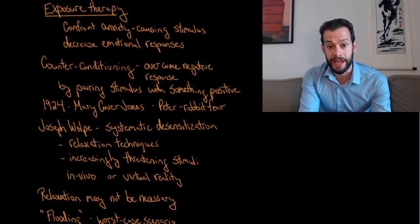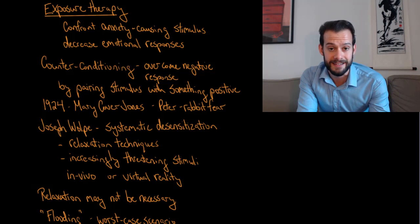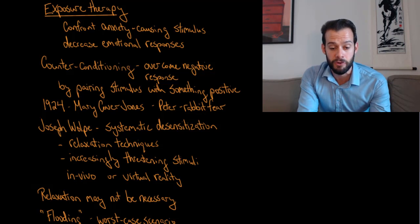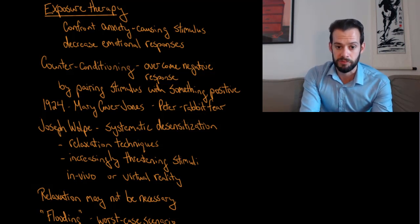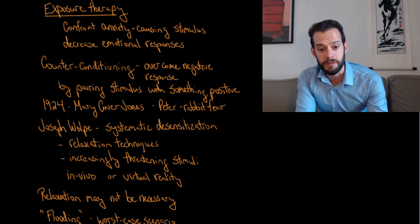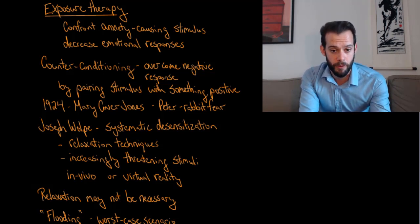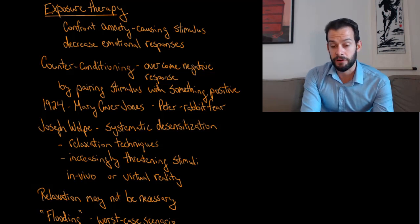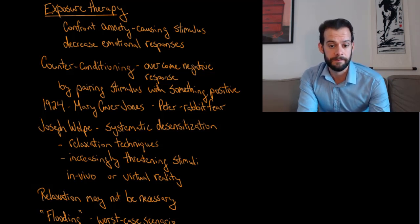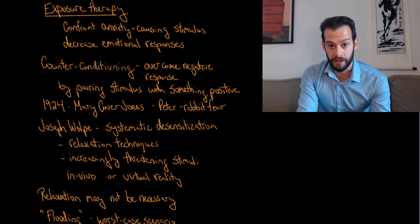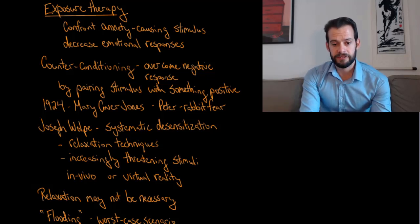Counter conditioning wasn't very popular as a treatment until a few decades later when systematic desensitization was introduced by Joseph Wolpe. Systematic desensitization consists first of learning relaxation techniques to reduce negative emotional responses — slowing your breathing and reducing anxiety — and then exposing the person to increasingly threatening stimuli. For example, if somebody had a specific phobia for snakes, they would first learn relaxation techniques like breathing exercises, and then be exposed to a snake — at first with somebody holding a snake on the other side of the room.